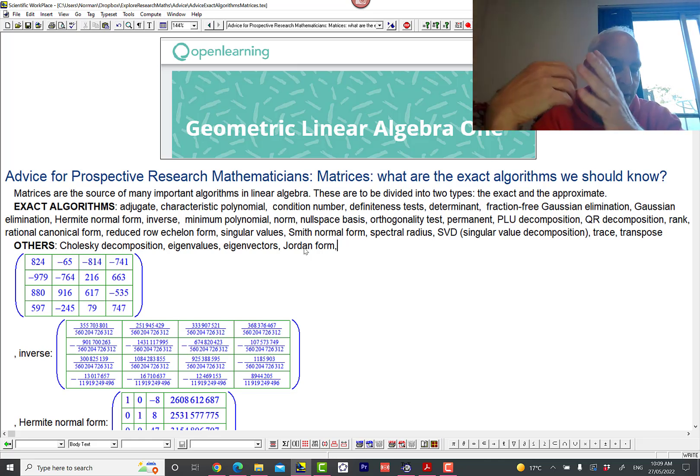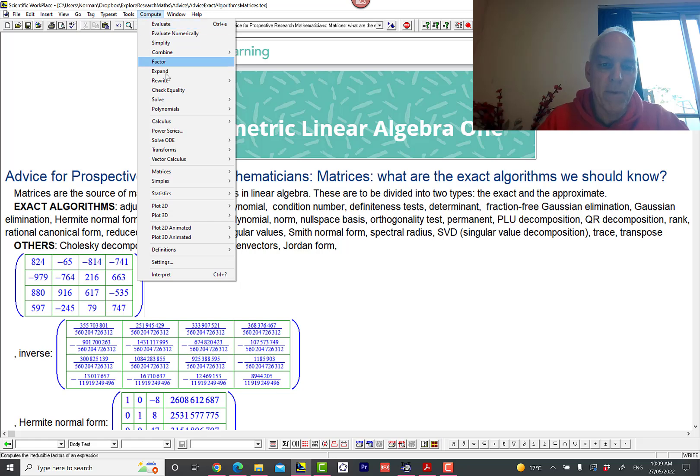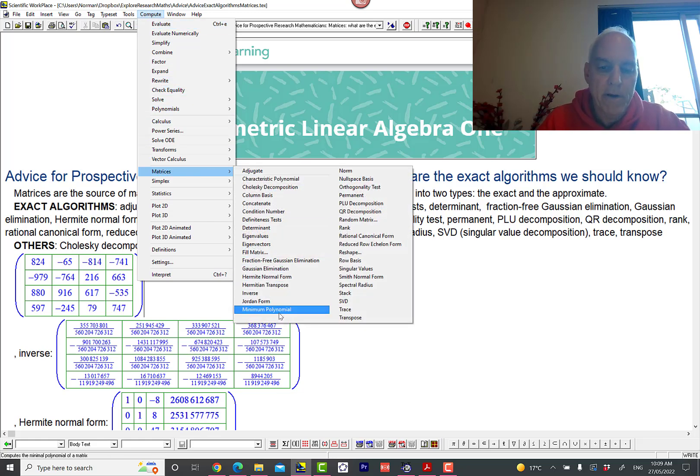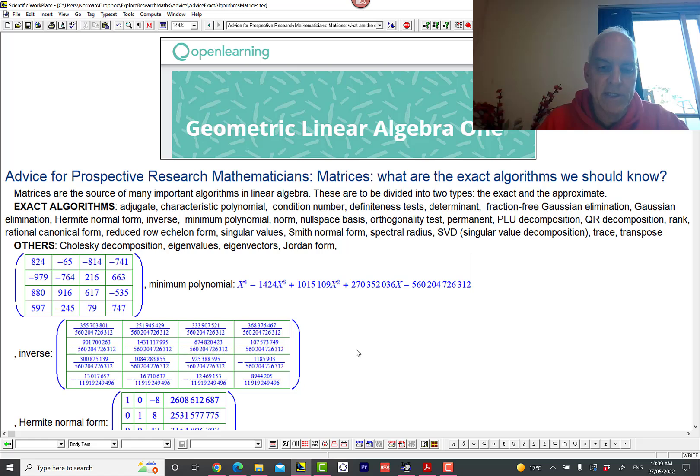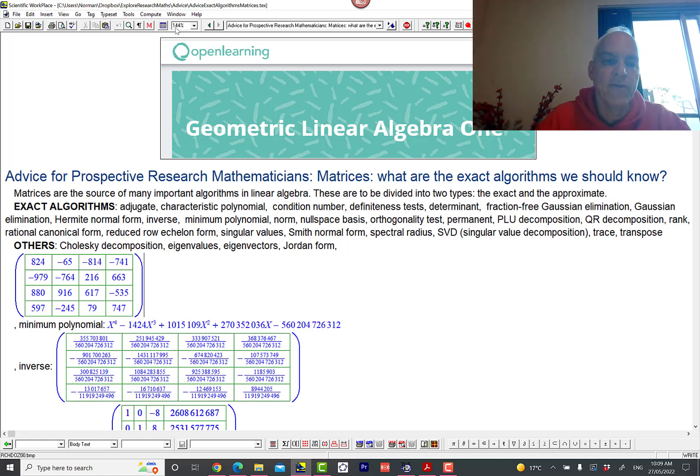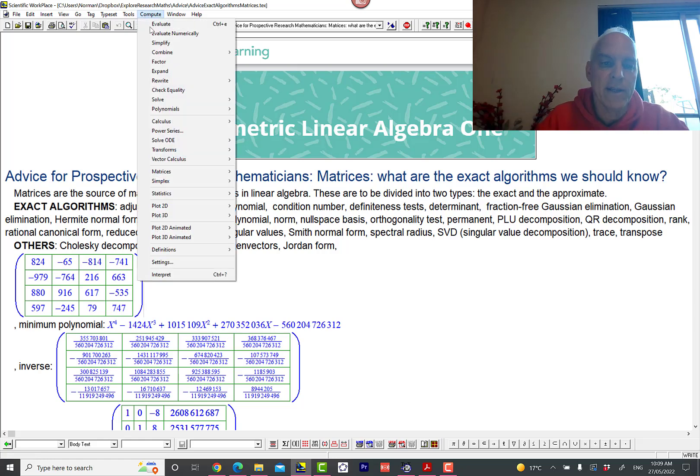How about minimal polynomial? Well the minimum polynomial is much like the characteristic polynomial. In this case it's the same but sometimes it's different. But in any case, that's still an exact calculation.